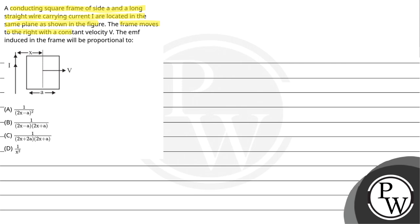The frame moves to the right with constant velocity V. The EMF induced in the frame will be proportional to option A: 1 by 2x minus a square, option B: 1 by 2x minus a into 2x plus a, option C: 1 by 2x plus 2a into 2x plus a, and option D: 1 by x square.